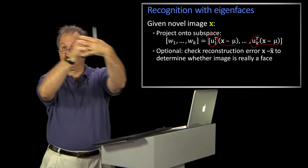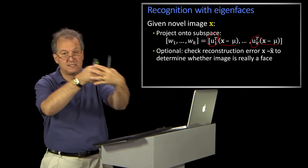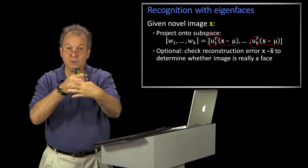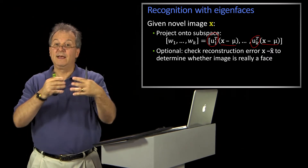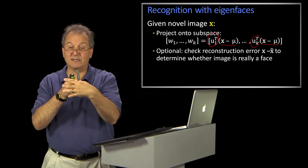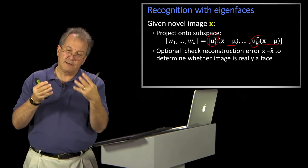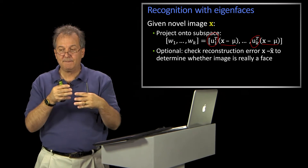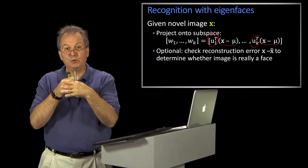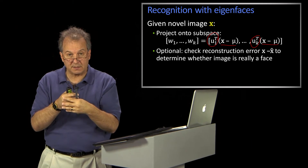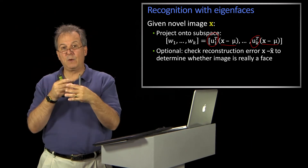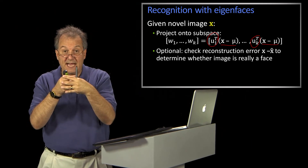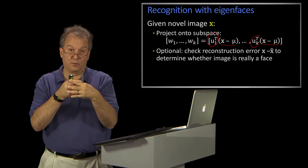It also means that if I'm looking for faces in a picture, I might do that. In fact, in the original Turk and Penland paper, they actually did detection that way. There are now better ways to detect raw faces, but the ability to reconstruct is a way of knowing that you actually have what you were looking for.